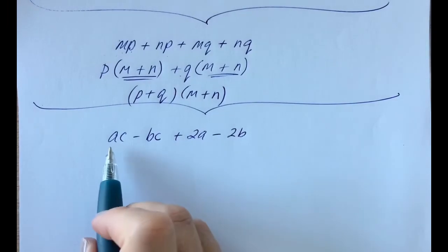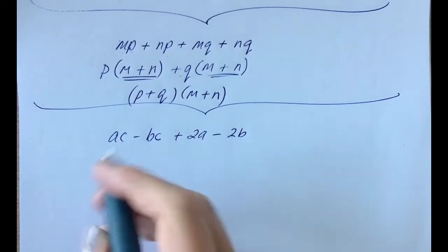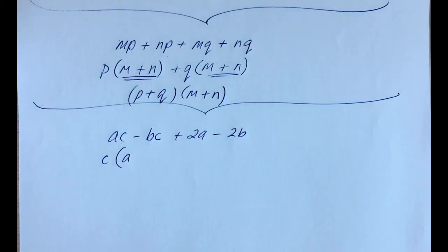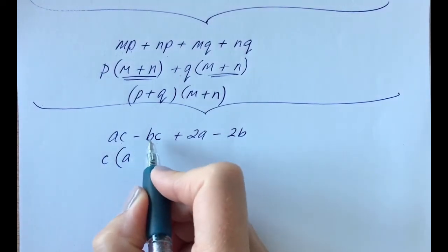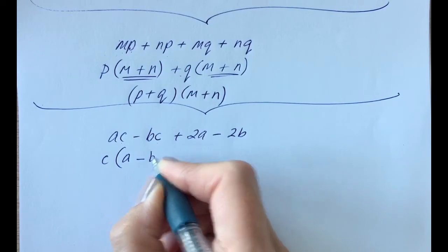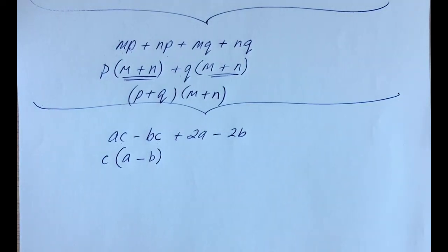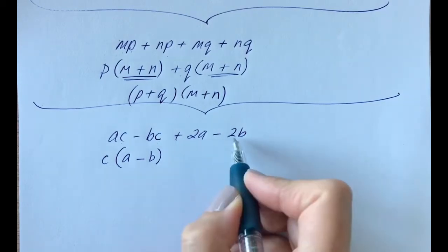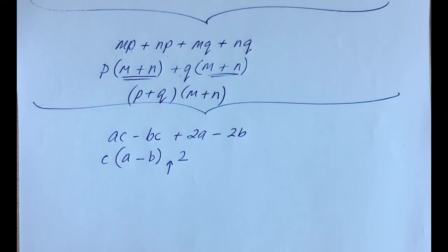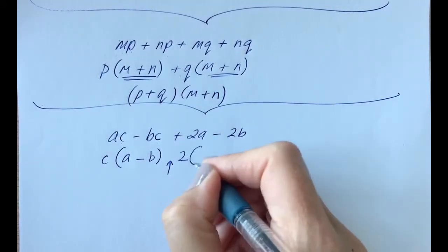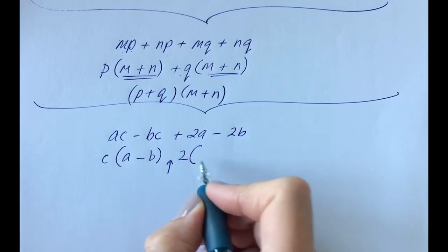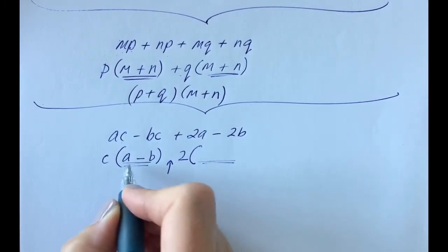Try this one. Looking at the first two terms, c is common to both, so I pull it out and open my bracket. c times a gives ca or ac. Then I need a minus bc, so I multiply by a minus b. Now looking at 2a minus 2b, we have a 2 in common. I would always leave this sign here till the end to fill in, especially when these get more complicated. Open your bracket straight away once you've pulled out what's common.